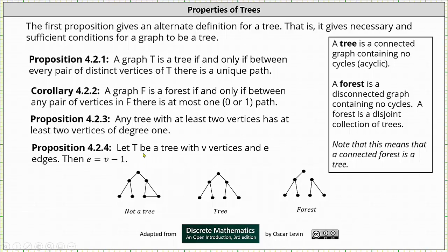And finally the last proposition, let T be a tree with v vertices and e edges. Then e the number of edges is equal to v the number of vertices minus one. If you look at the graph of the tree below, notice how the graph contains seven vertices and seven minus one is six and there are six edges in the graph of the tree.